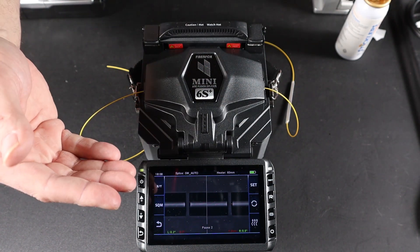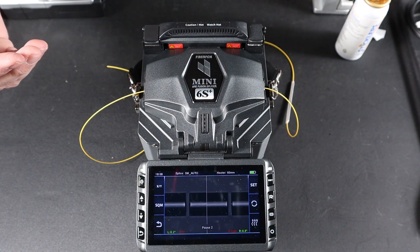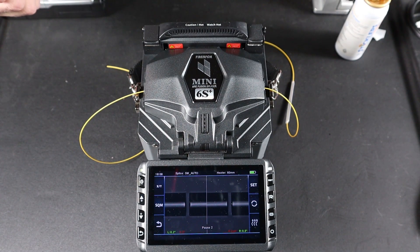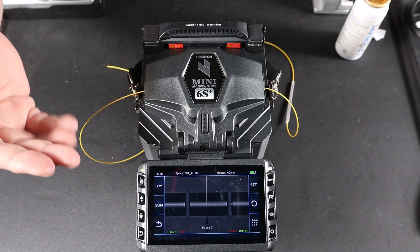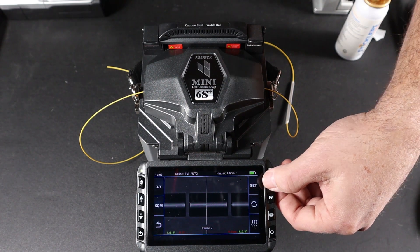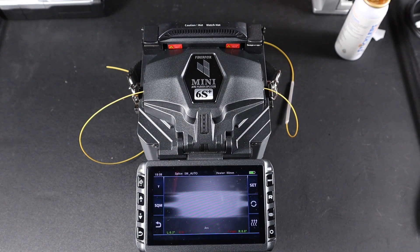At this point, it will pause. Once it's paused, this gives you the opportunity, if you have a bad cleave or a bad cleave angle, to remove the fiber and reprep it for splicing. Everything looks good. Now you can press set on the button or on the screen to start the splicing process.